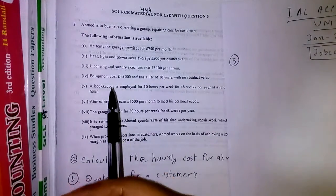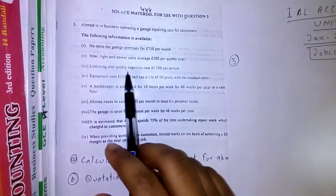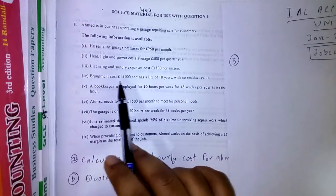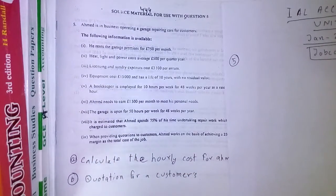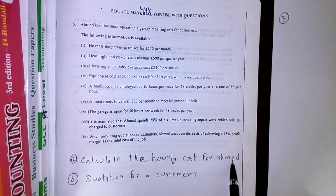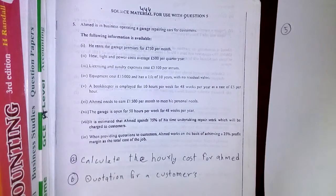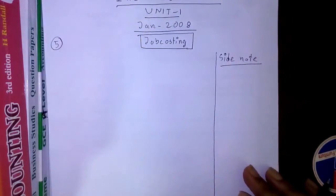In that particular question we have Ahamed's Garage, where information regarding his monthly rent, quarterly heat and light power cost, licensing cost, equipment depreciation, and bookkeeping cost are all given. Using this information we need to find out the hourly cost for Ahamed — how much does each hour of his business cost. To find that, we need total overhead and number of productive hours.